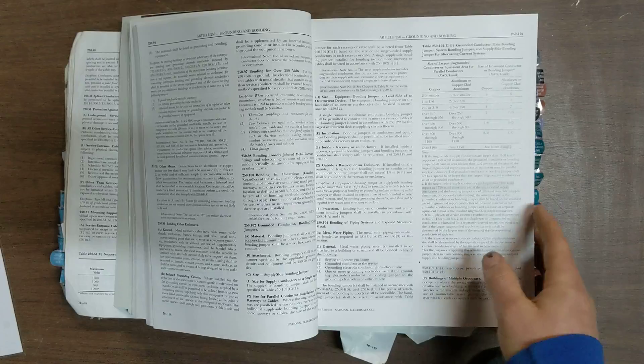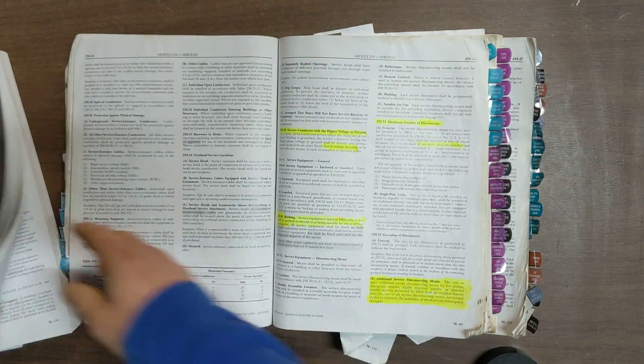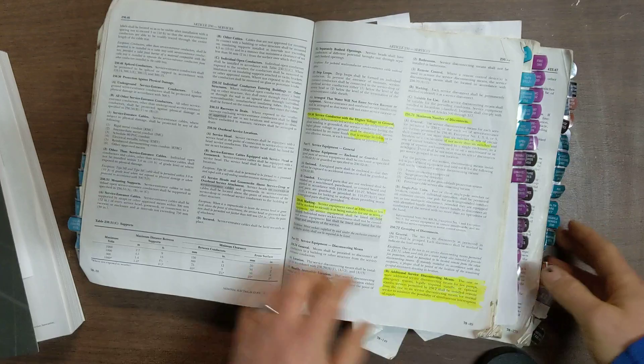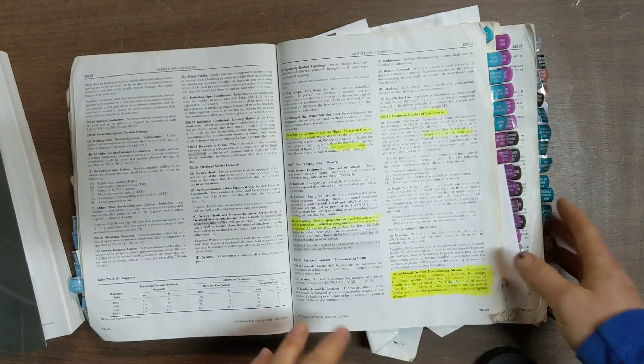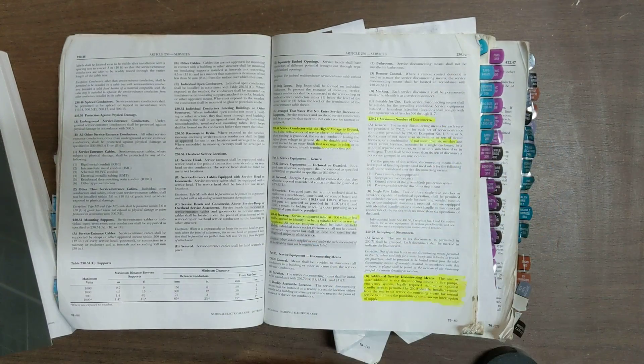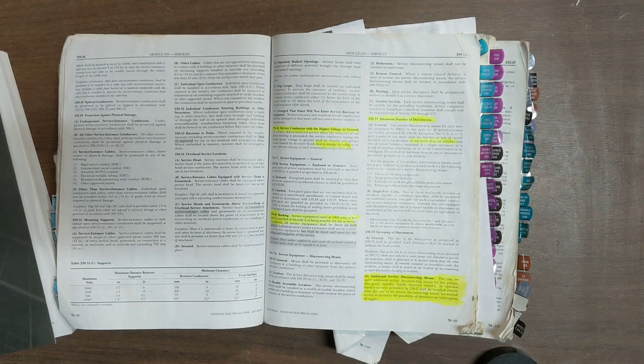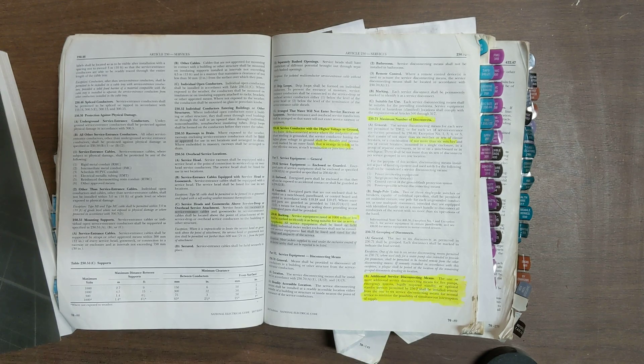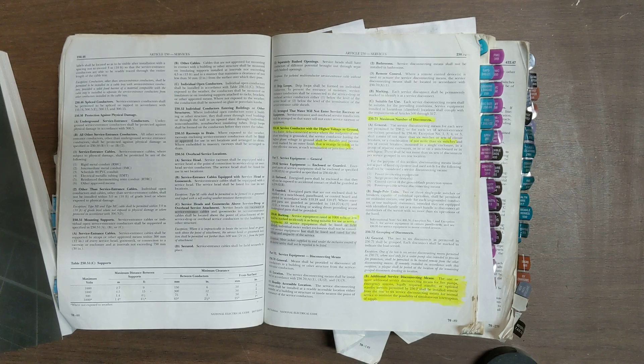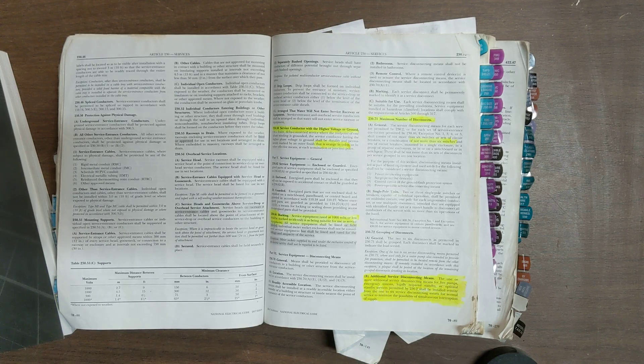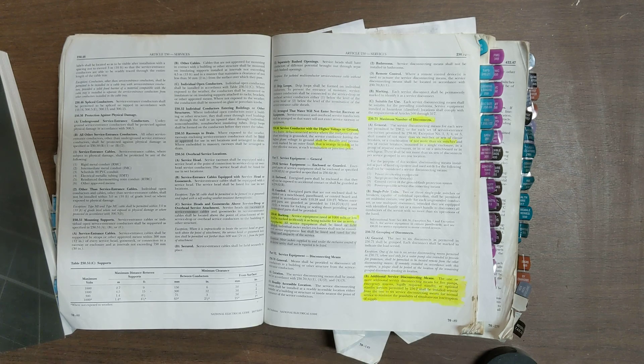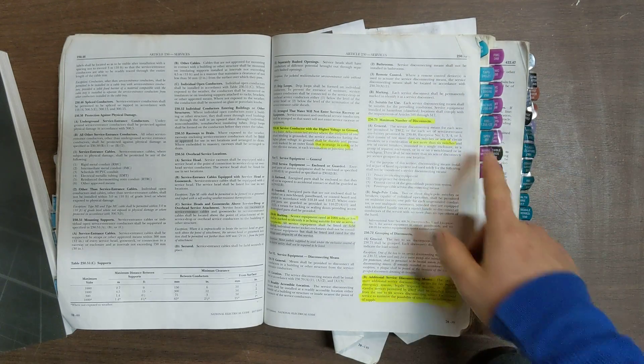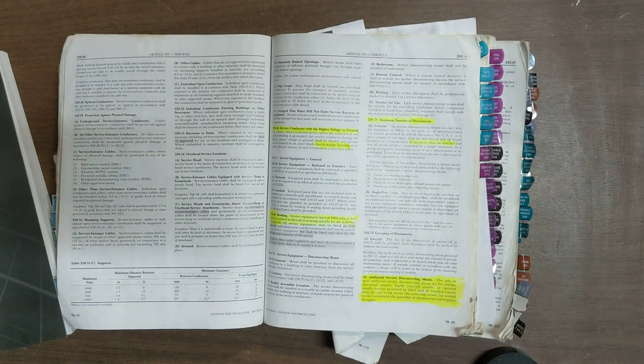So as we're moving along here, I want to look for a moment at my tabbed codebook. This one's had a rough life. I use it a lot in the field and for testing. So you want to know how your tabs are laid out. If you've not tabbed your codebook, you can check out my free video on how to tab your codebook. You can pick up your tabs at the store at electricalcodecoach.com. We'll get those shipped to you. You can watch our free video on how to install them. So assuming you've got your tabs here, you want to know how yours are laid out.